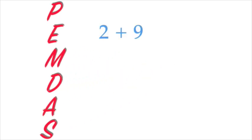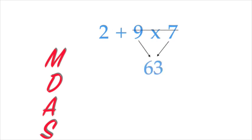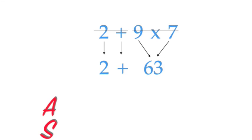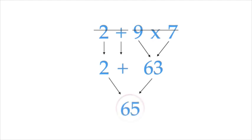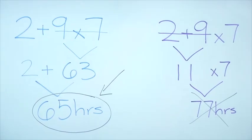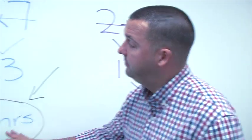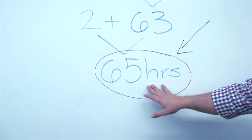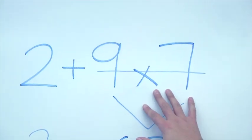You have seen our problem done two different ways. Now we're going to look at the correct way to do it. We have our list of order of operations: PEMDAS. In our problem — two plus nine times seven — there are no parentheses or exponents, so we can eliminate those. There is multiplication, so we do that: nine times seven equals 63. We cross off what we did and drop down what we did not do yet: two plus. There is addition, so we do that: two plus 63 equals 65. Our label is hours of sleep. 65 hours of sleep was the correct answer, because order of operations tells us we do multiplication before addition.